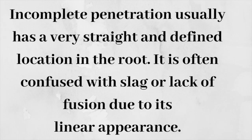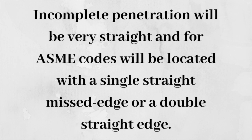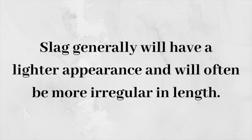Incomplete penetration usually has a very straight and defined location in the root. It is often confused with slag or lack of fusion due to its linear appearance. The important aspect is that incomplete penetration will be very straight, and for ASME codes it will be located with a single straight missed edge or a double straight edge. Slag generally will have a lighter appearance and will often be more irregular in length.